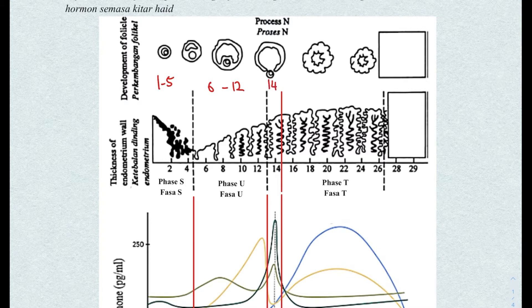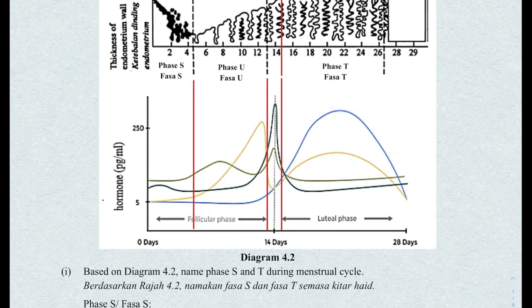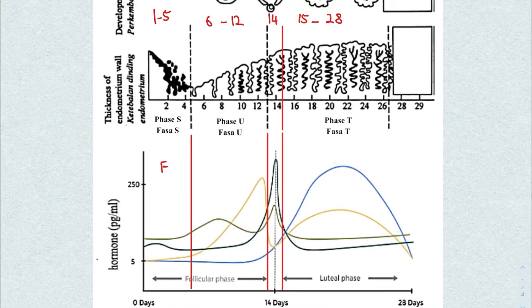Then day 13 to day 14 — just one day — is ovulation. And day 15 to the last day 28 is the pre-menstruation stage. Once you've done that, for the level of hormones graph, you need to do one more thing. Because during here it's hard to see which line represents which hormone. So to make your life easier, once you break down the four stages, just write down F-O-L-P — the four hormones in this specific order. The line that is highest in each of the phases is the hormone corresponding to that letter.